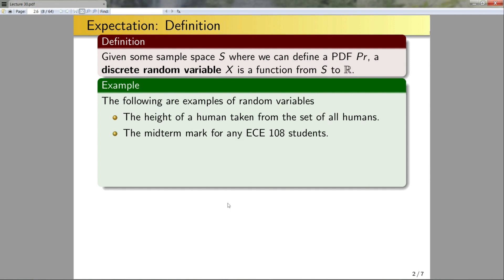Okay, so next, the midterm marks for any ECE 108 students. Okay, so we have a bunch of ECE 108 students. I could put a probability density function over them. And the midterm marks is a real number. So this would be an example of a discrete random variable.